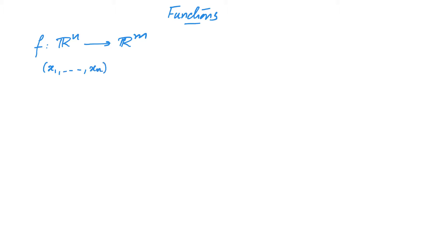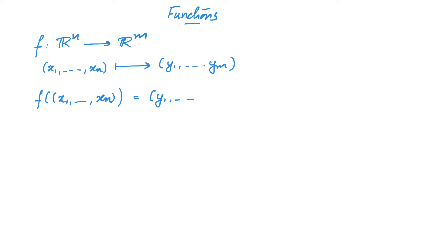It takes an arbitrary point (x₁, ..., xₙ) from Rⁿ and maps it to a unique point (y₁, ..., yₘ) in Rᵐ. We denote this as f(x₁, ..., xₙ) = (y₁, ..., yₘ). Although this is the correct notation, it is a little cumbersome because two sets of parentheses appear next to each other. Therefore, we will often write this as f(x₁, x₂, ..., xₙ), which is an abuse of notation but makes things very convenient.